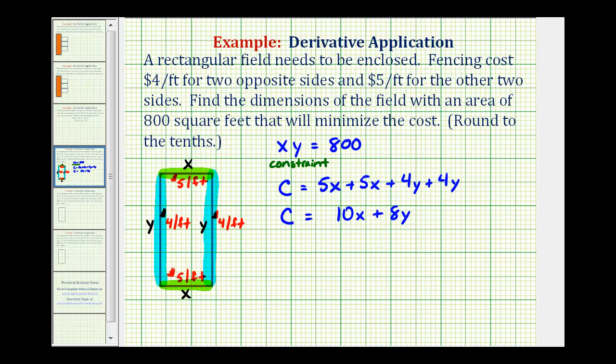Now this is the equation that we want to minimize, but right now we have the cost function in terms of both x and y. We want to rewrite this in terms of one variable using a substitution from the constraint. This is often called the primary equation. We have to go back to the constraint and solve it for x or y. Let's solve this for y by dividing both sides by x. So we would have y equals 800 divided by x, which means we can replace this y with 800 divided by x.